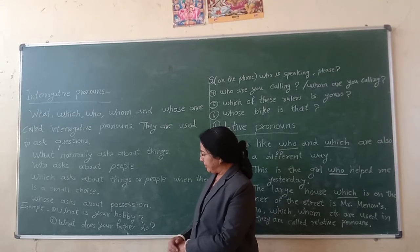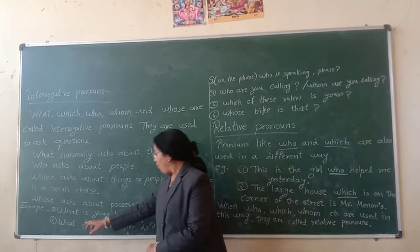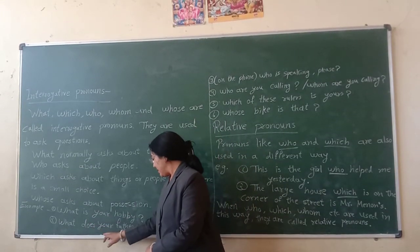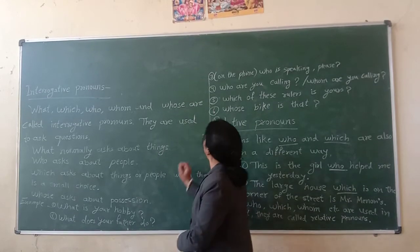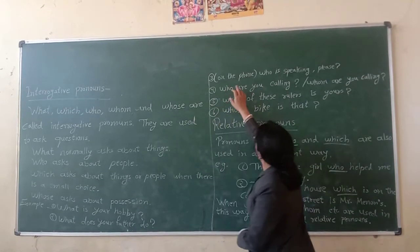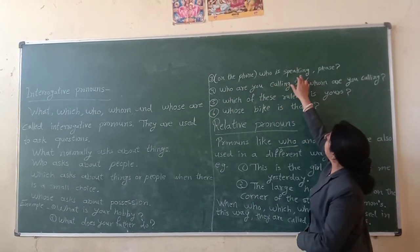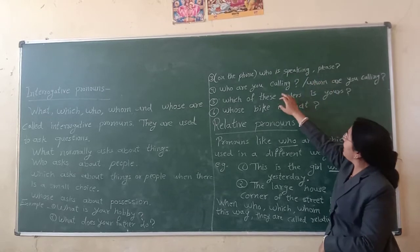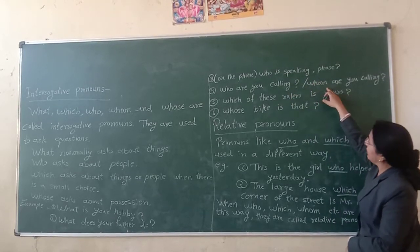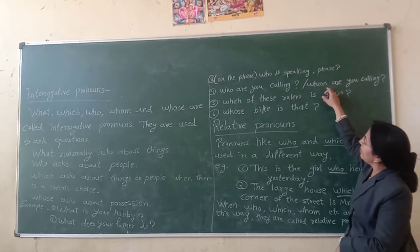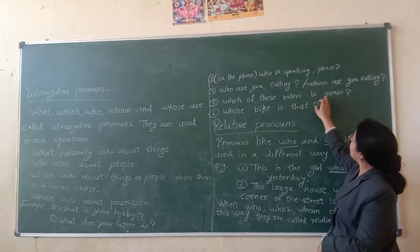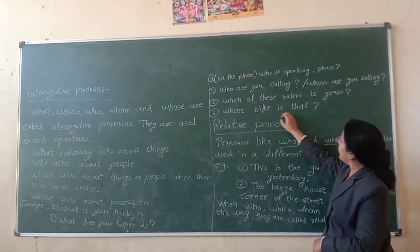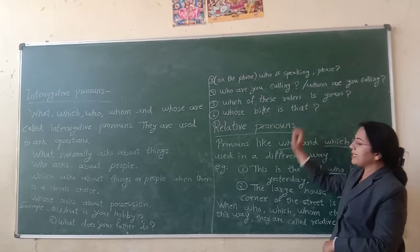Some examples: What is your calling? What was your silent rule? On the phone we ask, Who is speaking please? Who are you calling, or whom are you calling? Which of these rulers is lost? And whose body is that?